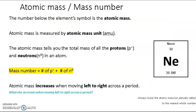The number below the element's symbol is the atomic mass, which is 20.180 for neon. Atomic mass is measured by the atomic mass unit. The atomic mass tells you the total mass of all the protons and neutrons in an atom. Always round the atomic mass to the nearest whole number to get the mass number.